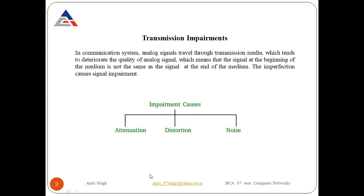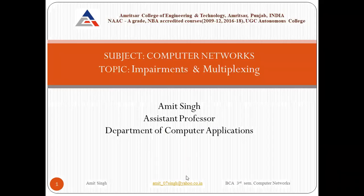What are the main reasons for impairment causes, or what are the main problems that occur when we transmit data? There are three impairment causes: the first is attenuation, the second is distortion, and the third is noise.